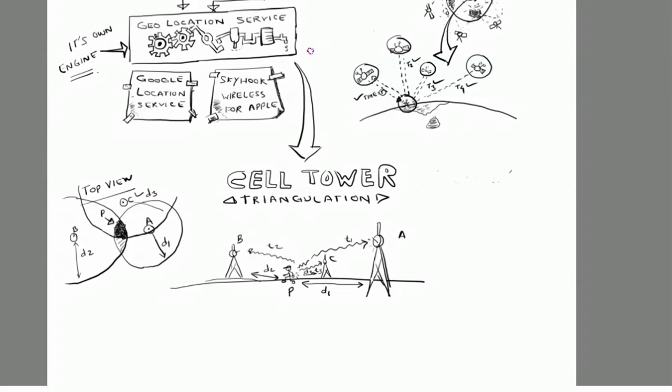There are other options as well to find out location like the wifi access system or your IP address, but again IP address is being used by the cell tower triangulation as well.